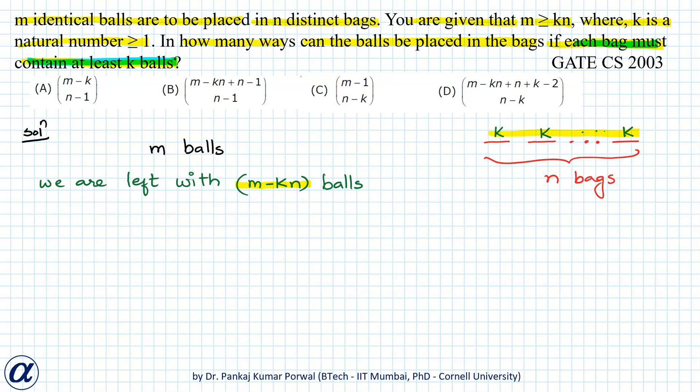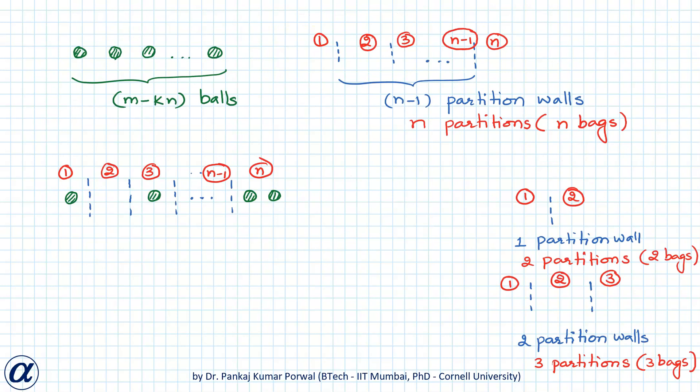balls in n bags such that the bags may contain any number of these m minus kn balls. To do that, we think of this problem as a permutation problem for m minus kn balls and n minus 1 partition walls.